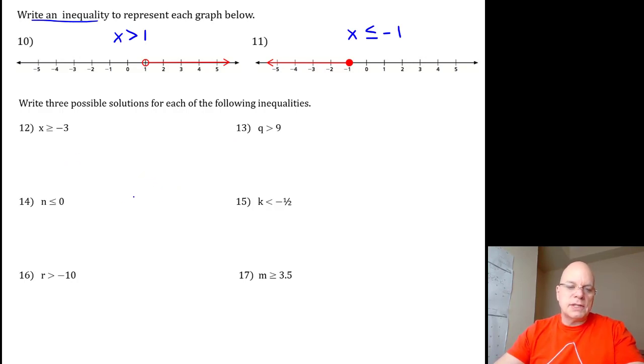Now, for 12 through 17, you kind of have to check yourself. For 12, x could be any value greater than or equal to negative 3, so if you have negative 3 as a solution, that's correct, and then anything greater than negative 3, like 50 or 89 or 0 or negative 2 or negative 1 or negative 1.5. As long as you convince yourself that it's negative 3 or any number to the right of negative 3 on a number line, then you've got them all.